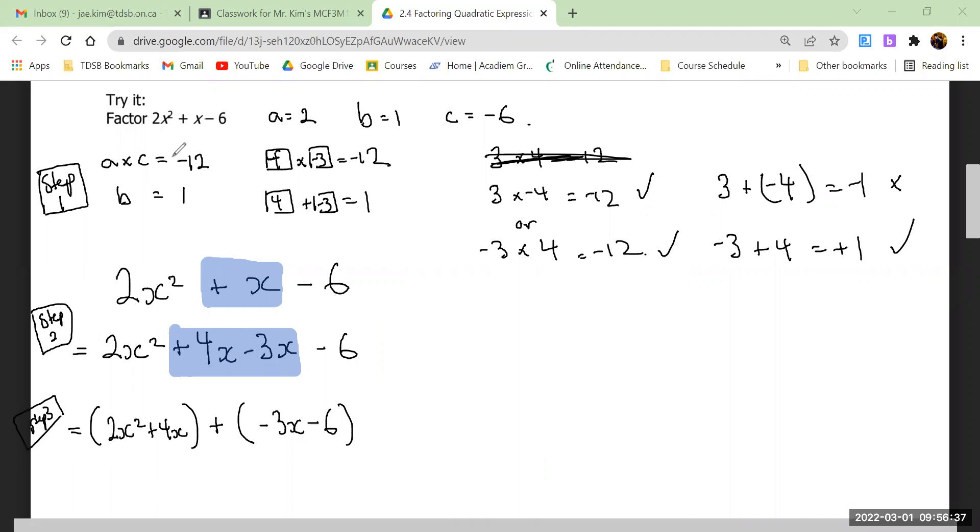Recap: can you multiply these two numbers and find two numbers that multiply to that and add to this? Number two, can you take those two numbers and break it apart? Then can you put two brackets in? It's not necessarily hard but it is still like a puzzle, so you have to take your time until you get used to it.